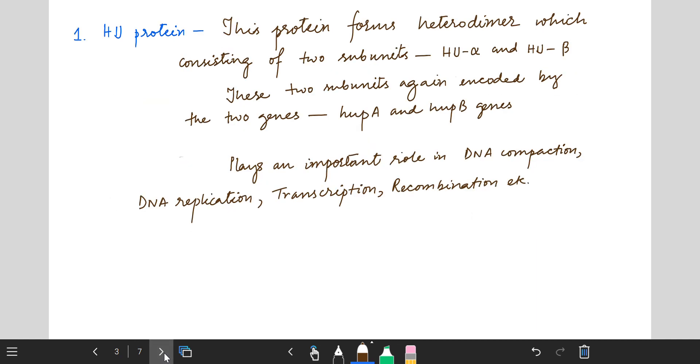Now we will study the individual proteins. HU represents the heat unstable protein. This protein exists as homodimer in most bacteria, but in E. coli or enterobacteriac bacteria, it forms heterodimer consisting of two subunits: HU alpha and HU beta. These two subunits are encoded by two genes, HUPA gene and HUPB gene.